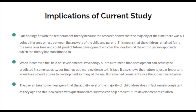Our findings fit with the temperament theory because the research shows that the majority of the time there was a one-point difference or less between the answers of the child and parent. This means that children remained fairly the same over time and could predict future development, which is the idea behind the within-person approach. When it comes to the field of developmental psychology, our results mean that development can actually be predicted in some capacity. It also shows that nature is just as important as nurture when it comes to development, as many results remained consistent since the subjects were babies. The overall take-home message is that the activity level of the majority of children does in fact remain consistent as they age, and this paired with questionnaires can help predict future development of children.